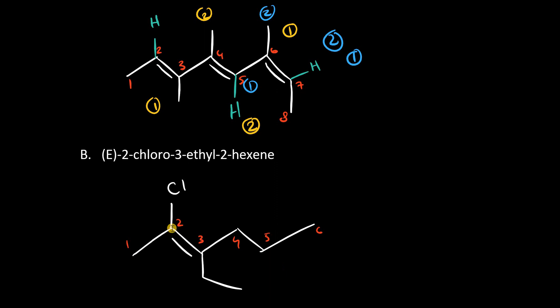At carbon 2, the chlorine takes higher priority over the methyl. And at carbon 3, we have an ethyl versus a propyl group, so the propyl takes priority. And in this configuration, it's Z. We're asked to draw E, so we need to switch out any one of these two groups, and it should satisfy the E constraint.